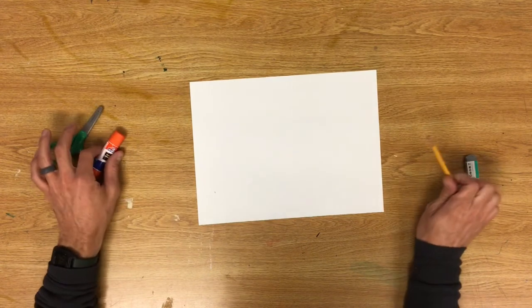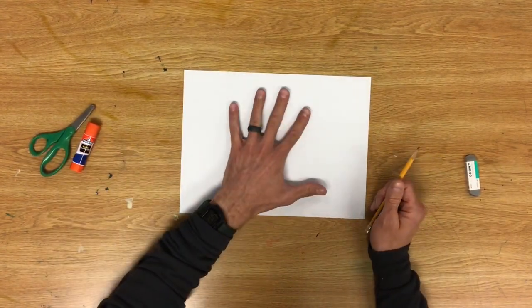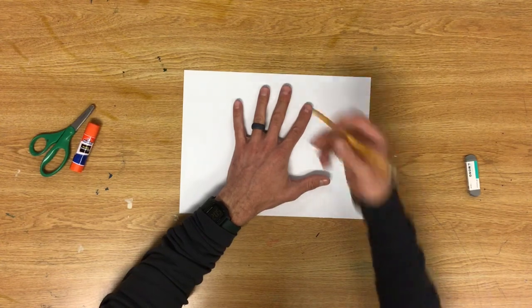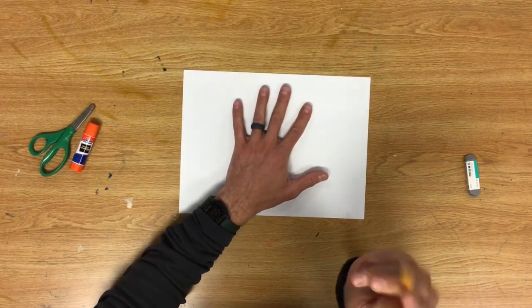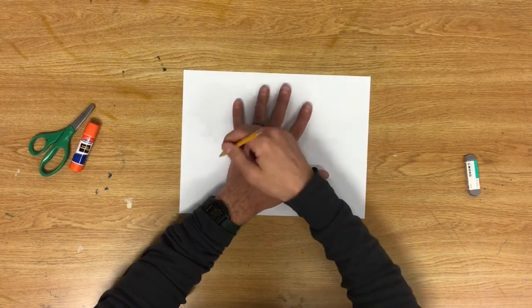Step one, I'm going to move some of the stuff off to the side. I'm going to take my paper and I'm going to place my hand down in the middle, and then I'm going to trace my hand.